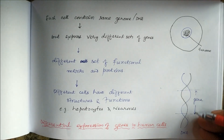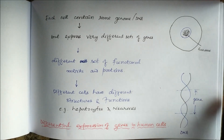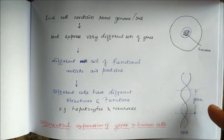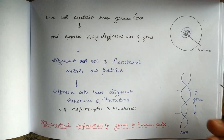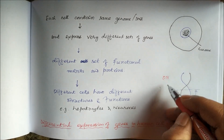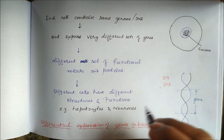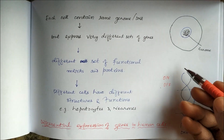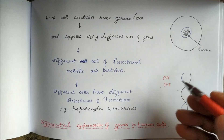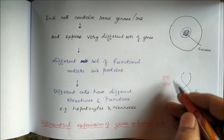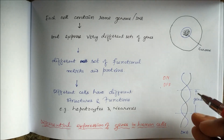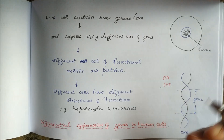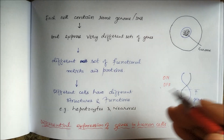A gene is a part of the DNA which can be expressed to produce the corresponding mRNA and protein. Some genes are on and some genes are off — a particular cell requiring certain proteins will have those genes in the on condition, while genes for unneeded proteins or enzymes will be in the off condition.